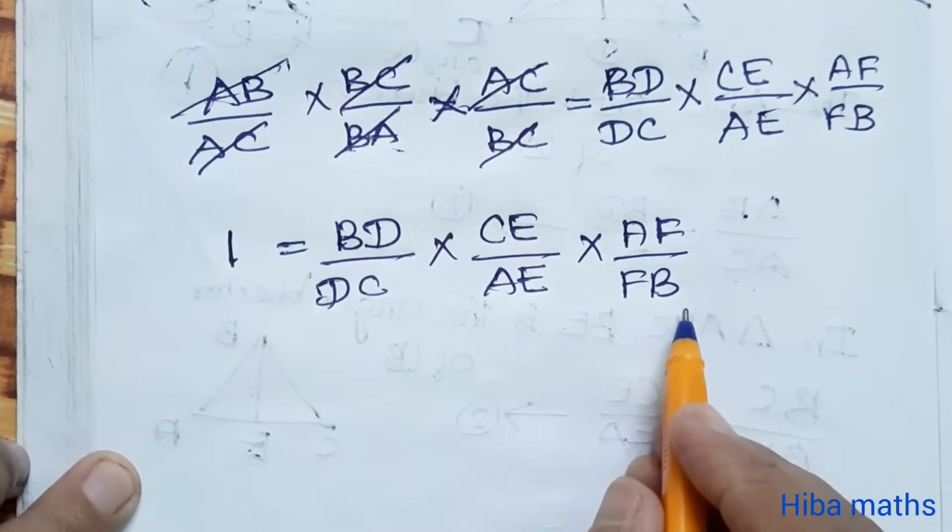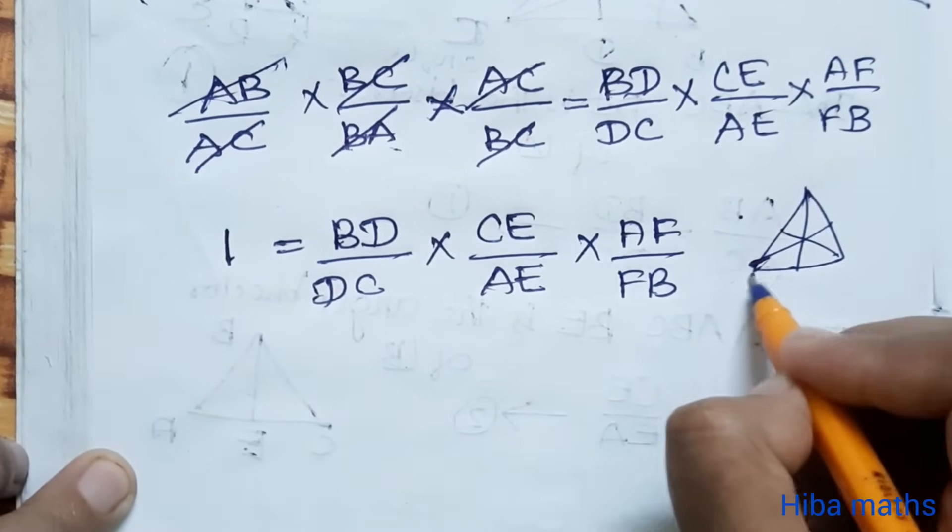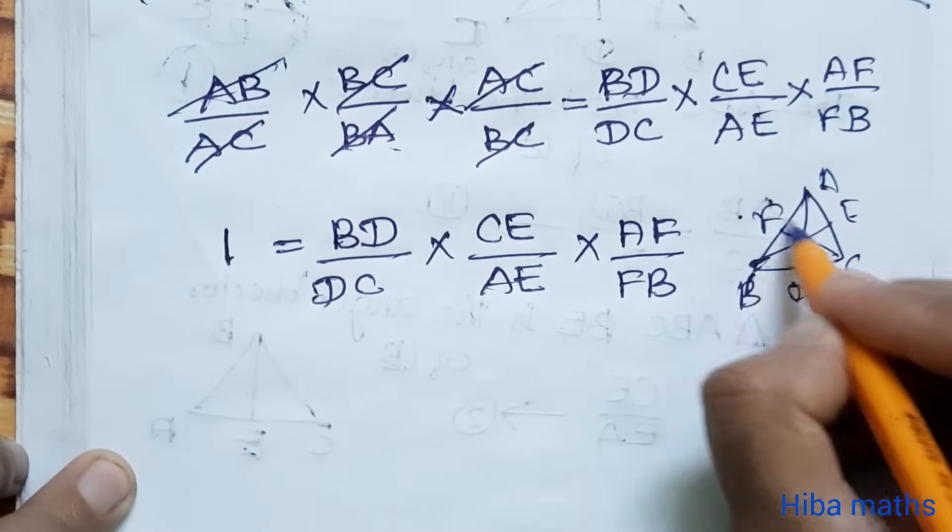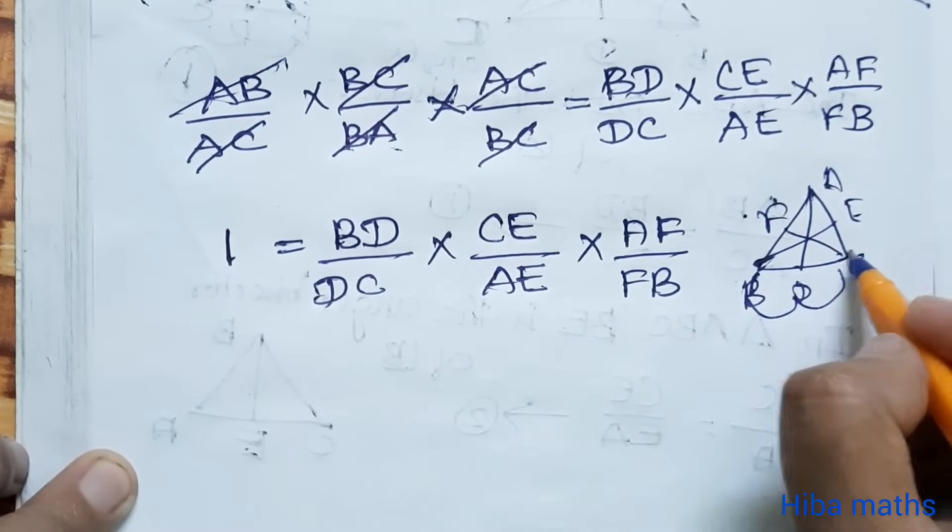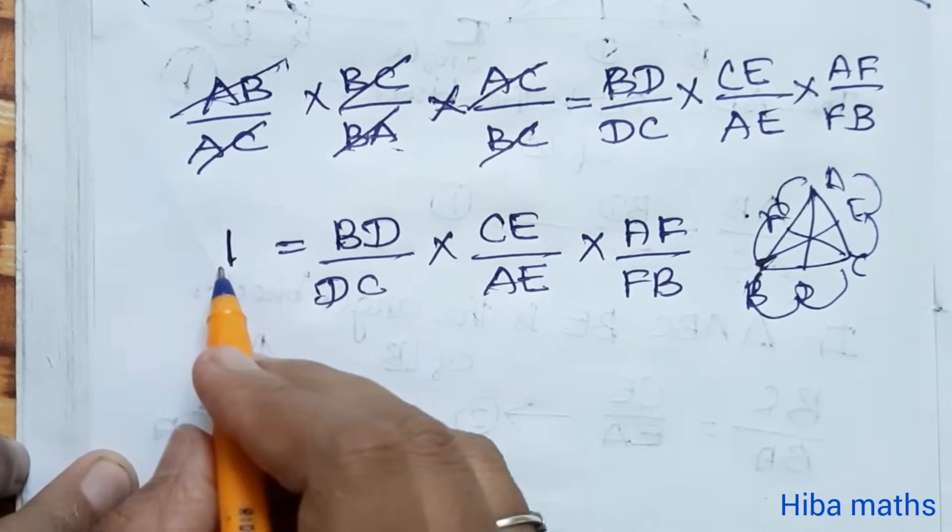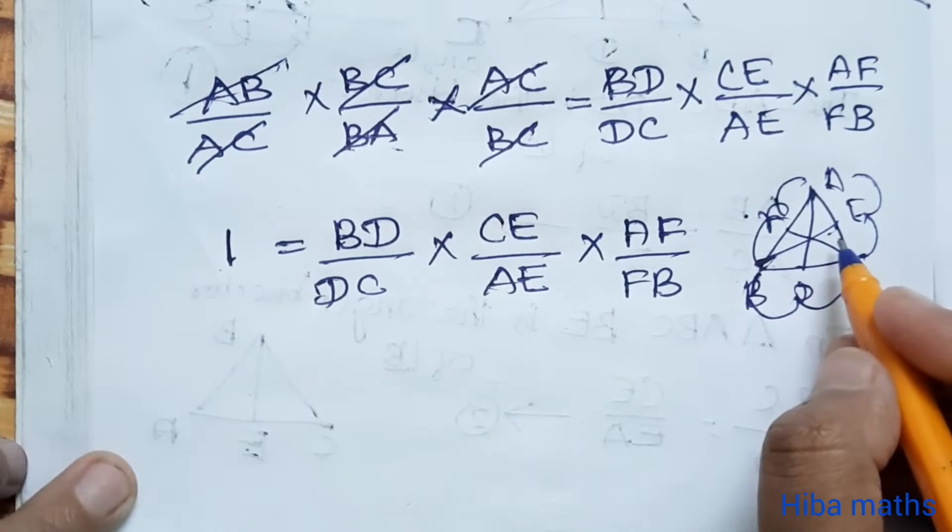1 = BD/DC × CE/EA × AF/FB. So this is Ceva's theorem. If this equals 1, all the angle bisectors are concurrent.